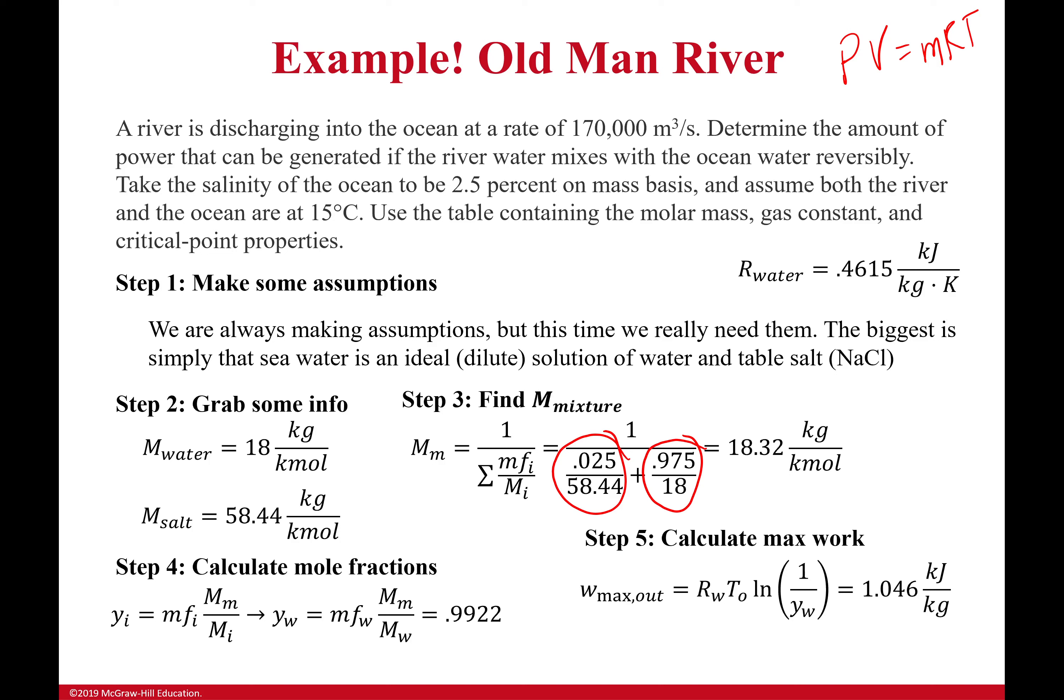So with that, what I'm doing right here is I'm simply saying, okay, I don't have a pressure or volume for this water, but I do have a temperature. I have an ideal gas constant. I know what fraction is actually liquid water. And so with that, I can then calculate and say, okay, what's my work max out per kilogram here? Per kilogram. It's going to be 1.046 kilojoules per kilogram.